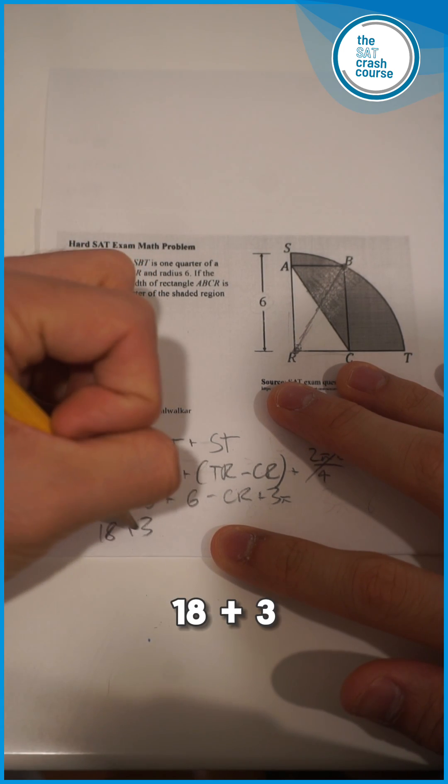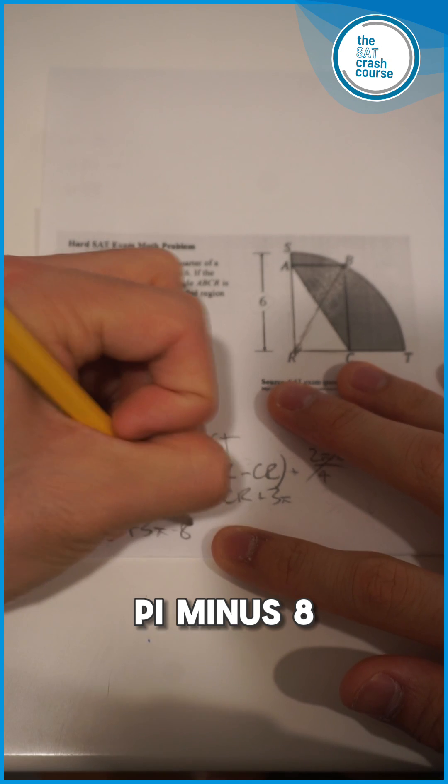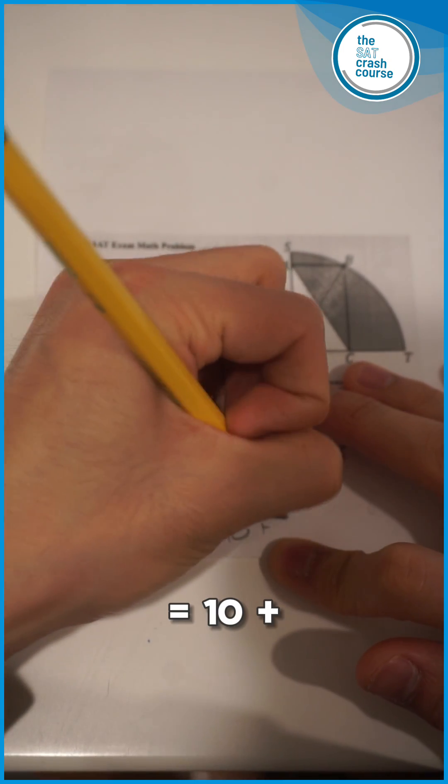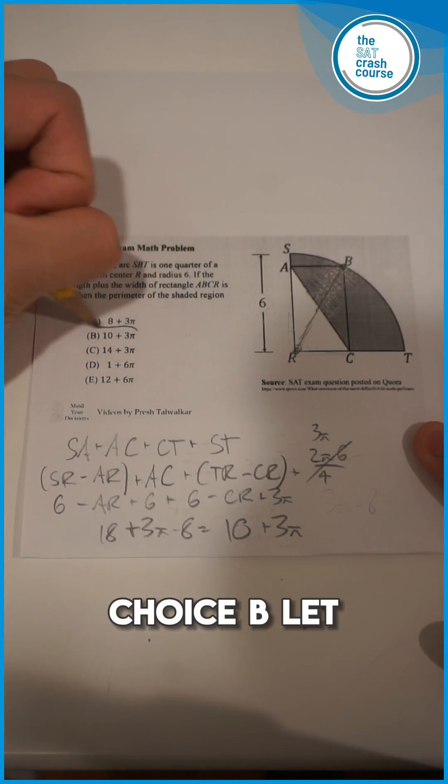So we have 18 plus 3π minus 8 equals 10 plus 3π. And this is our final answer, which is answer choice B.